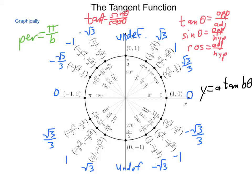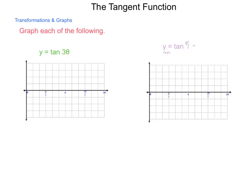So, let's get a little bit of practice of actually graphing a couple. We're going to graph each of the following, y equals tangent of 3 theta, and y equals tangent of pi halves theta.